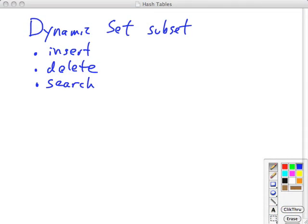Hash tables, or tables in general, provide a subset of the dynamic set operations. Today we're going to be concerned with insertion, deletion, and searching. An example might be a symbol table in a compiler where you need to keep track of variables and look them up.